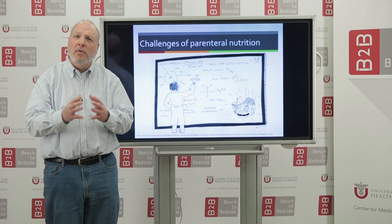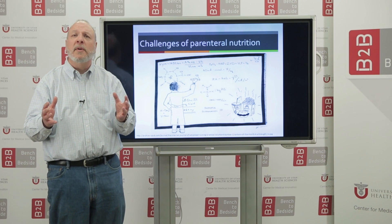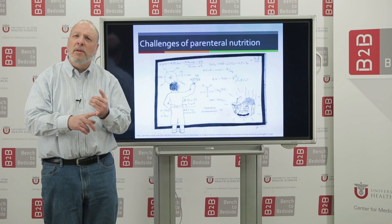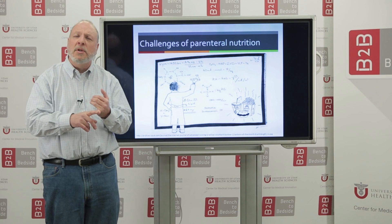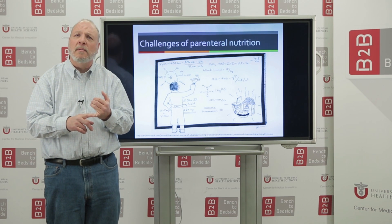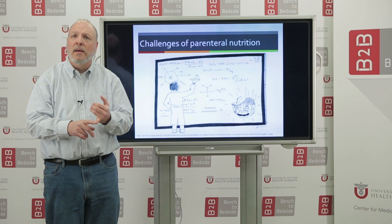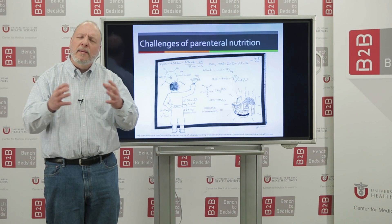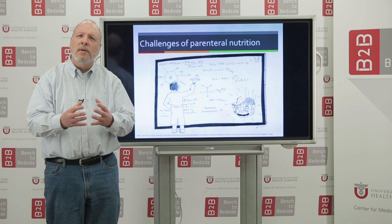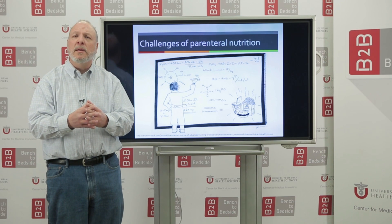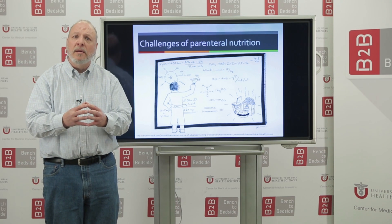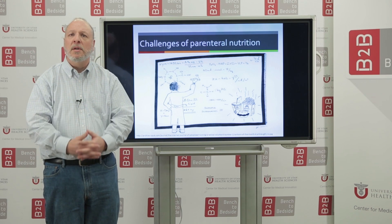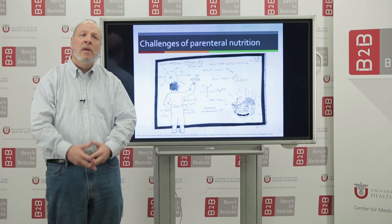There could be 20 to 30 different types of chemistries necessary. There's also the need to understand what medications the patients are taking — for example, whether a patient is diabetic or not. The total parenteral nutrition tries to supplement, as best it can, the patient's ability to receive all those different nutrients.